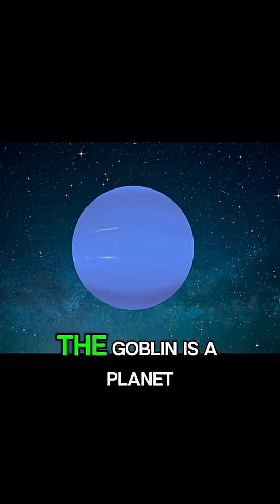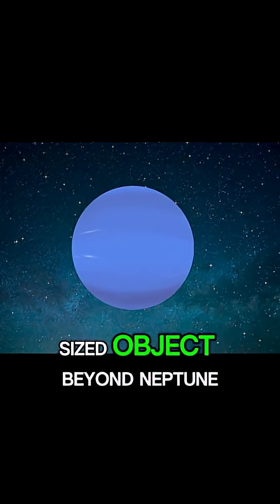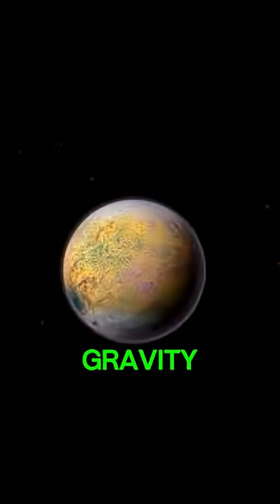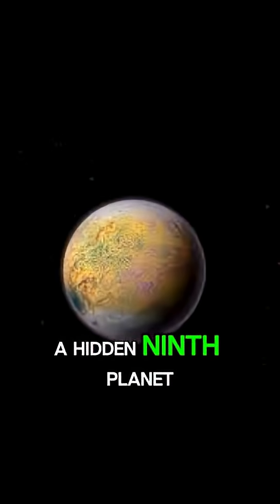Fact number one: the Goblin is a planet-sized object beyond Neptune that barely feels the sun's gravity. Scientists think it might be a hidden ninth planet.